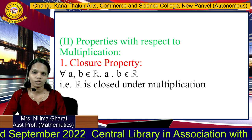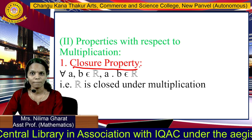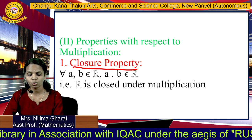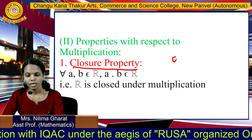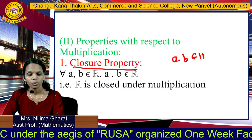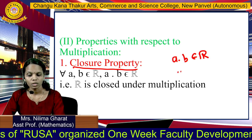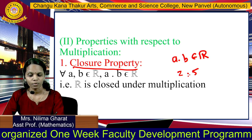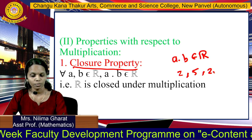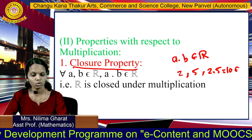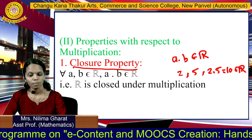Next are properties with respect to multiplication. The first is the closure property with respect to multiplication. For any two real numbers A and B, A into B also belongs to the real numbers. For example, 2 and 5 are real numbers and 2 into 5 equals 10, which is also a real number. This means R is closed under multiplication.